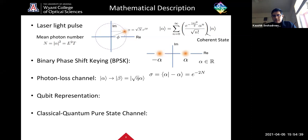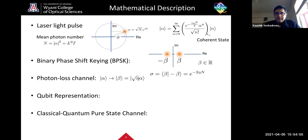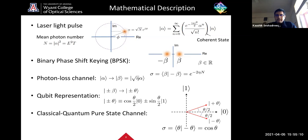The photon loss channel is modeled as an attenuation of the complex field amplitude of your laser pulse by a transmissivity factor eta — specifically square root of eta — where eta is a number between zero and one. When you have attenuation on your BPSK states, these states become coherent states that are even more overlapping and hence more indistinguishable.